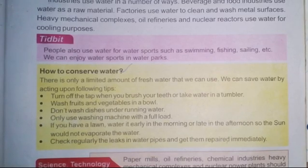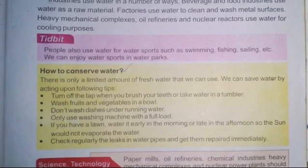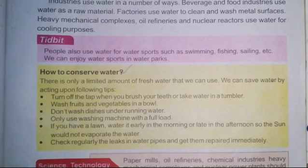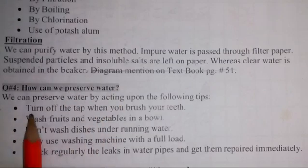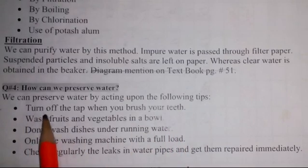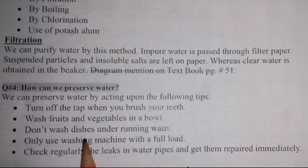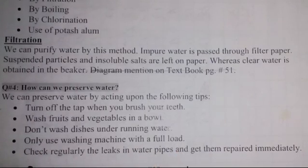Now it's time to write down the question, as this is also part of our notebook work. This will be question number four of Chapter 5 on water. The question is: how can we preserve water? The answer is: we can preserve water by acting upon the following tips — (1) turn off the tap when you brush your teeth, (2) wash fruits and vegetables in a bowl, (3) don't wash dishes under running water, (4) only use the washing machine with a full load, and (5) check regularly for leaks in water pipes and get them repaired immediately.